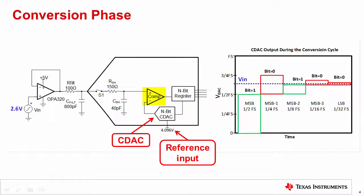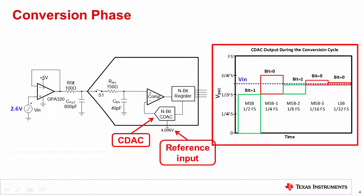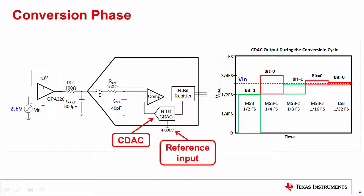A high-speed comparator is used to perform the bit decisions. In this example, we cover a 5-bit converter, so 5 comparisons will be done starting with the most significant bit, or MSB, and moving to the least significant bit, or LSB. The SAR ADC converter performs a bit decision every conversion clock cycle, where the CDAC sets a binary weighted voltage at the input of the comparator. The plot at the right shows the binary weighted CDAC voltages as the binary search algorithm converges to the input voltage. Next, we will show the internal CDAC circuit and provide an overview of how it functions, giving better insight into the origin of the current transients generated at the ADC reference input.